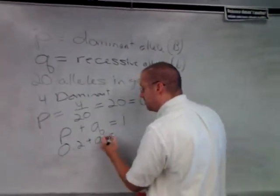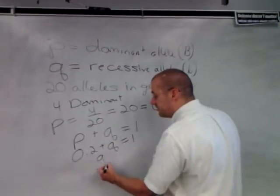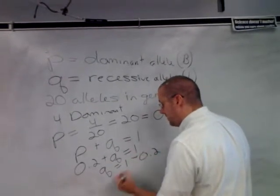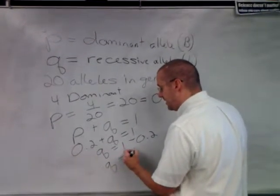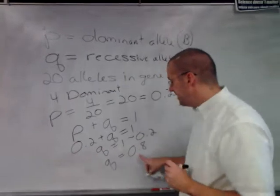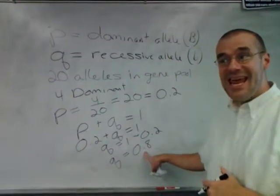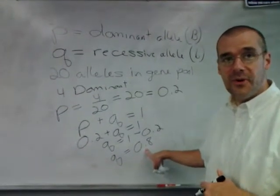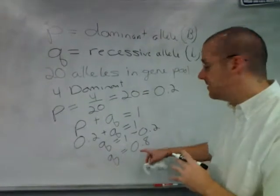We don't know Q, but we know it equals 1. We can do simple algebra, and you can find out that the recessive allele is in 80% of the genes in the gene pool. 0.8 is 80%.